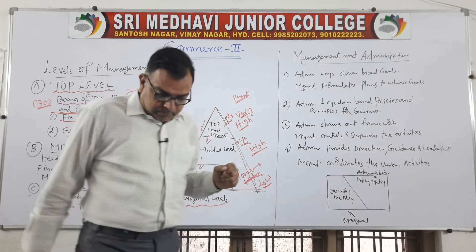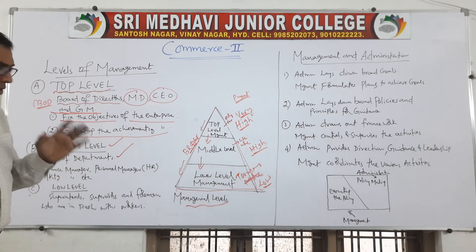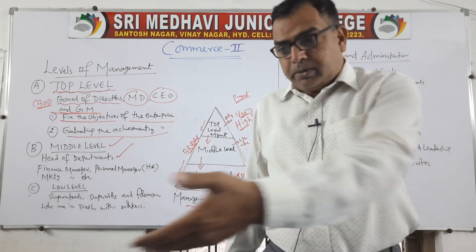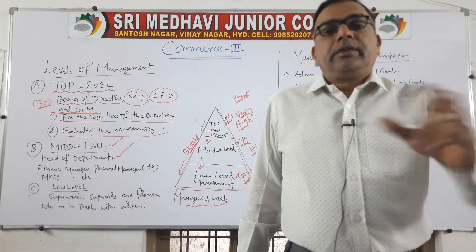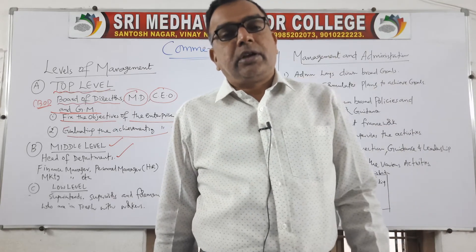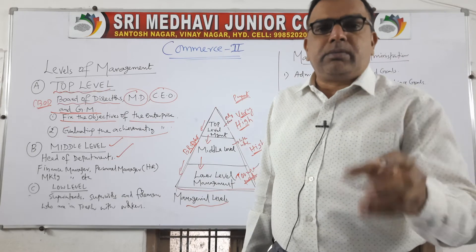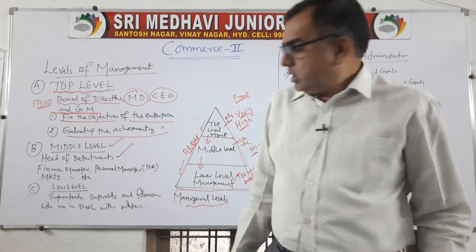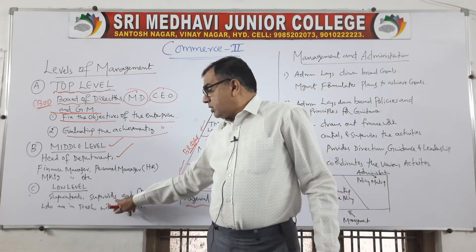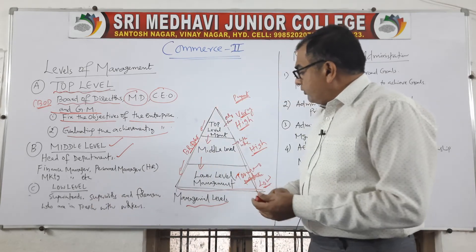Coming to your future plan — if you are an ordinary student who just completes graduation, like completing your intermediate by this March or April and then studying graduation for three years, or four years under the new educational policy — completing BCom, BBA, or some such graduation course — where will you be? You will be at the lower level. At most, you may be a supervisor or, with some improvement, a superintendent. With just a normal graduation, your salary will be very low.